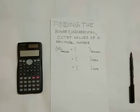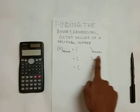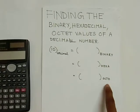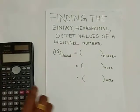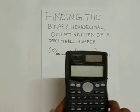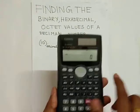Using the calculator, we can convert a decimal number to binary, to hexa, to octet, and vice versa. To do that, take the calculator and switch it on.